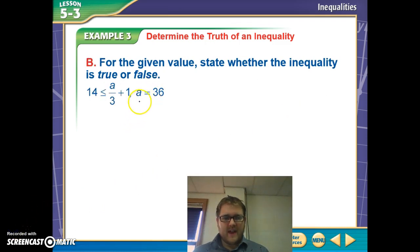Now let's look at this one where you have A equals 36. So we're saying 14 is less than or equal to 36 over 3 plus 1. Order of operations tells me I need to divide first. So 36 divided by 3 is 12 plus 1. 14 is less than or equal to 13. This is not true. So that statement, 14 is less than or equal to A over 3 plus 1 when A equals 36 is false.